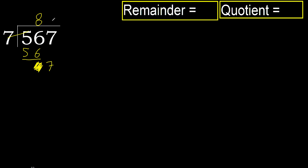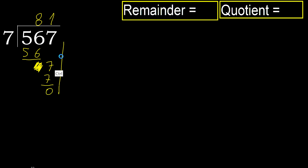7. 7 multiply by 1 — 7 is not greater. Subtract: 7 minus 7 equals 0. Next. There is no number, therefore finish it.